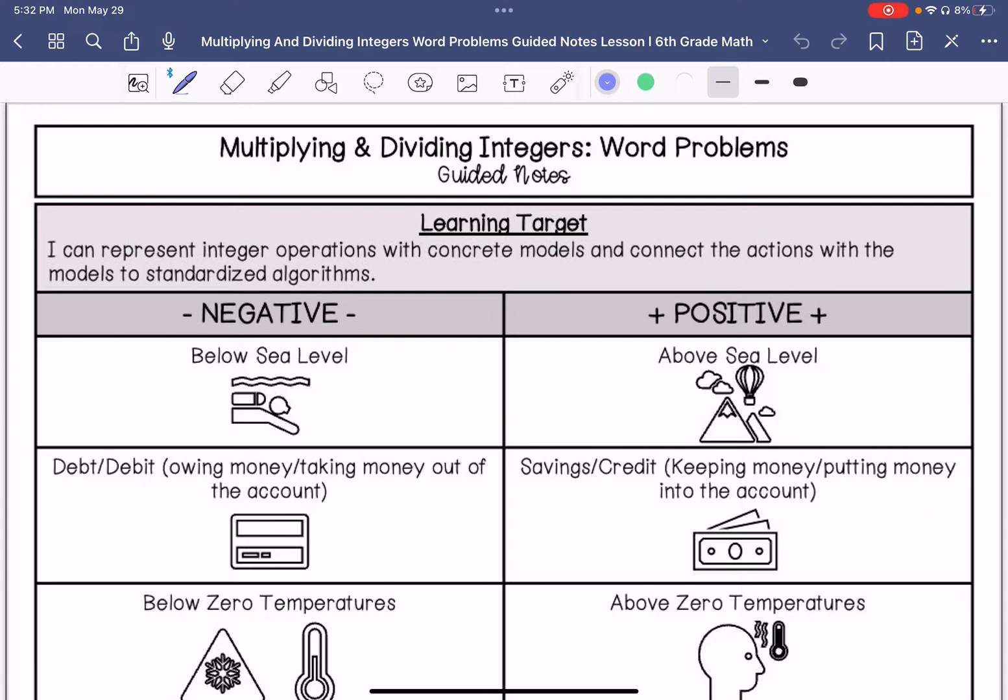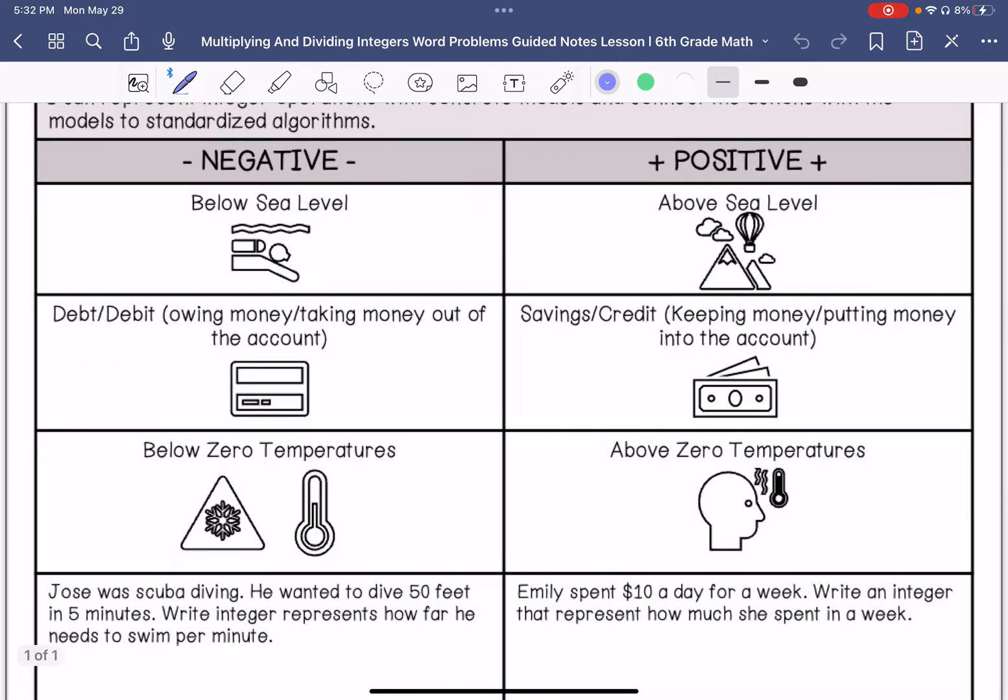We are talking about keywords and figuring out what a word problem is really asking us to do. So our keywords for negatives are below sea level, debt, debit, owing money, taking money out of an account, or below zero temperatures.